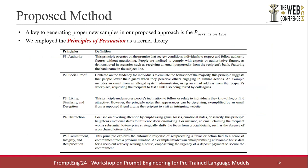A key to generating proper new samples in our proposed approach is the persuasion type. We employ the principles of persuasion as a kernel theory. In general, social engineering attacks such as smishing capitalize on social psychological triggers to promote the process of persuasion. Specifically, Ferreira and Telles in their 2019 work suggested five components that influence the effectiveness of persuasion in real-world contexts.